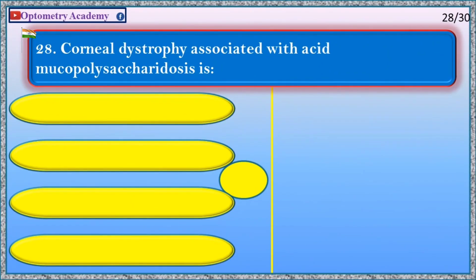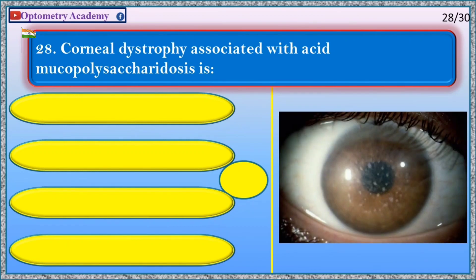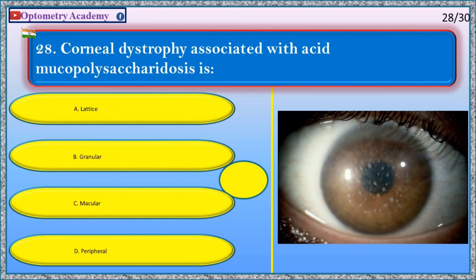Corneal dystrophy associated with acid mucopolysaccharidosis is: A. Lattice, B. Granular, C. Macular, D. Peripheral.